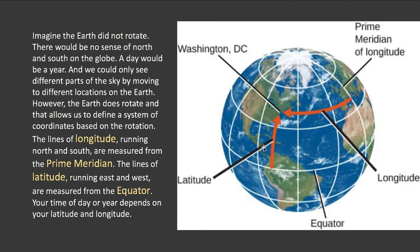We can also measure lines of latitude starting from the equator, which runs right through the middle of the globe. Lines of latitude run east and west, and we measure them as so many degrees north latitude and so many degrees south latitude. Lines of longitude run north and south, measured as degrees west or east longitude. So the fact that the earth rotates gives us this sense of north, south, east, and west, and allows us to put a grid on the globe to talk about what time of day or time of year it is.